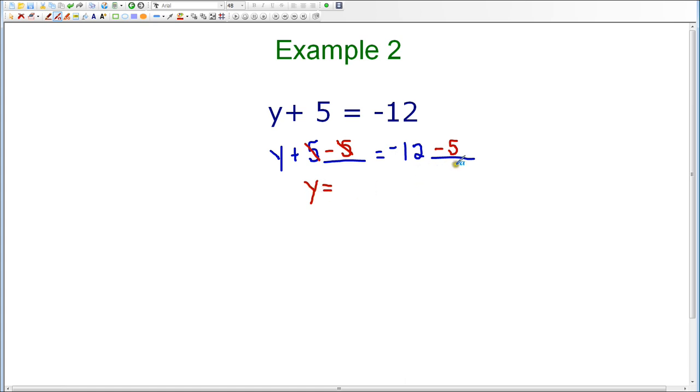On the right-hand side of the equation, I now have negative 12 minus 5. And if you use your integer operations, you know that negative 12 minus 5 is the same as negative 12 plus negative 5. We need to add the opposite or keep change change. So negative 12 plus negative 5 is negative 17. So I end up with an answer of y equals negative 17.